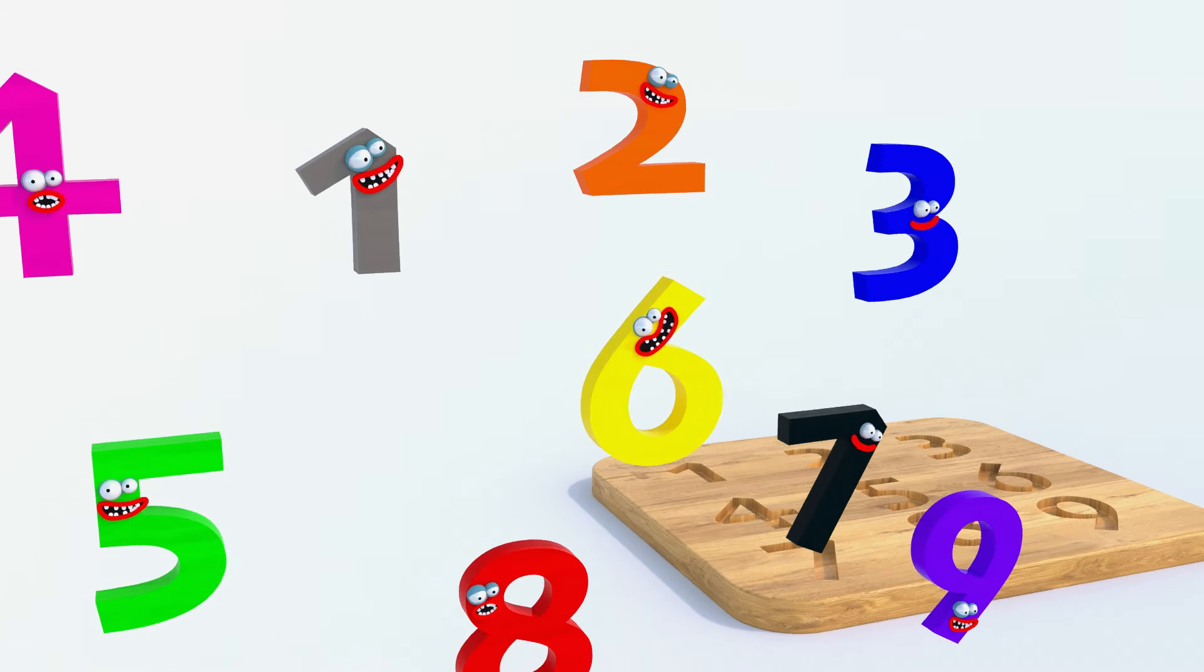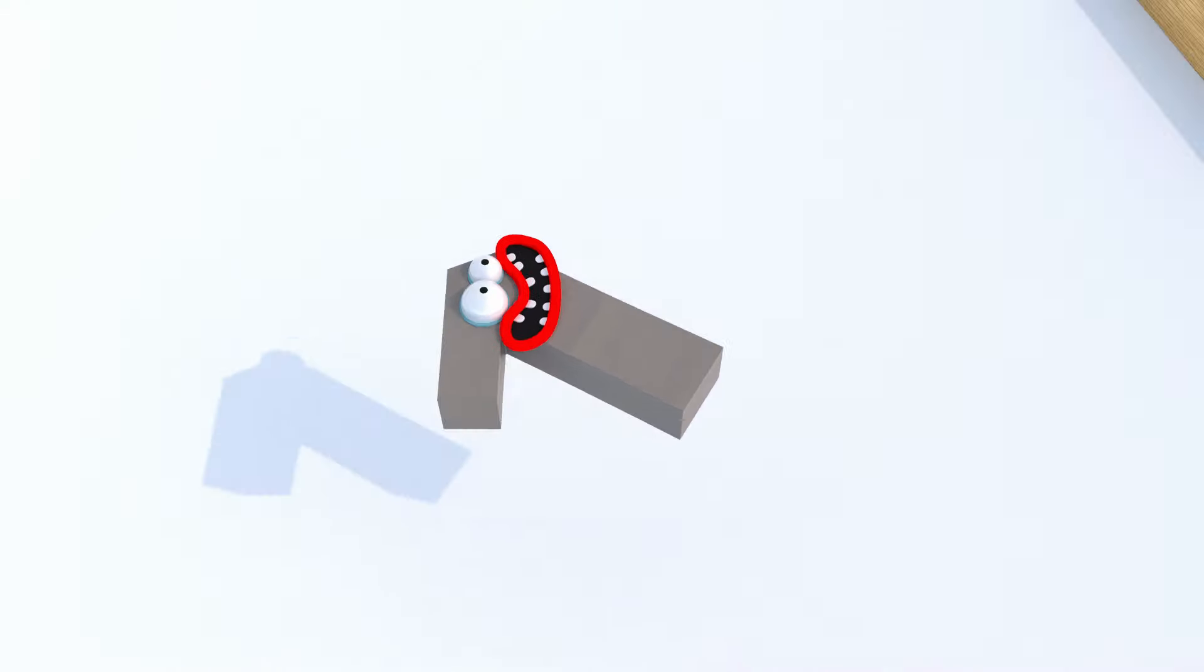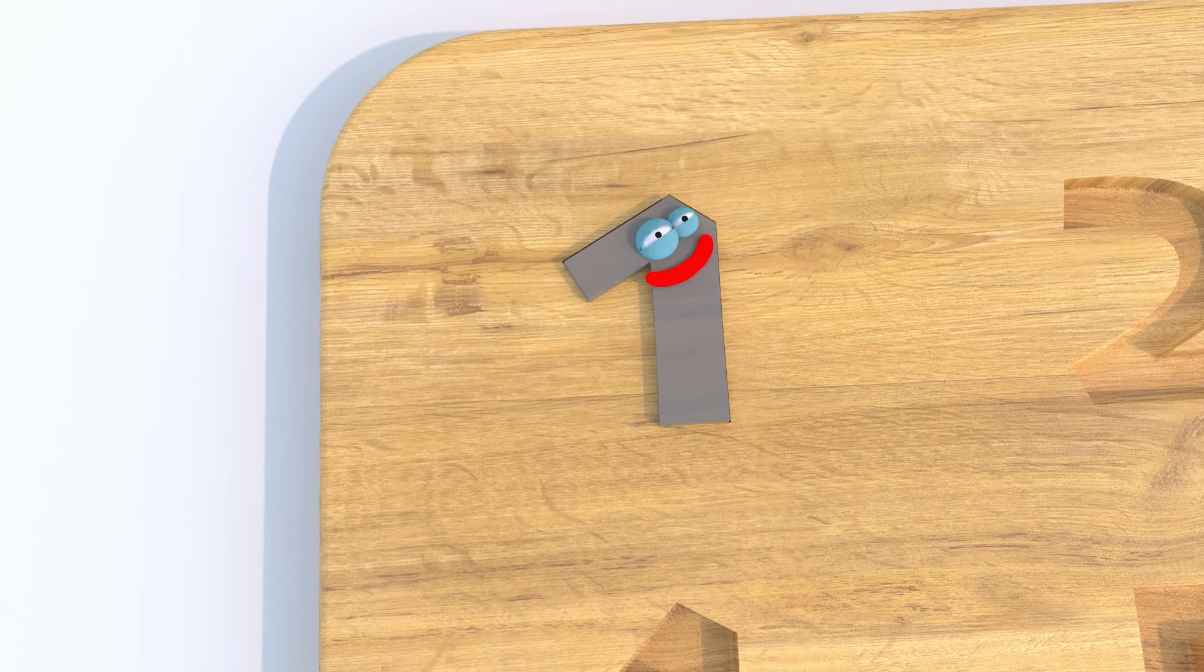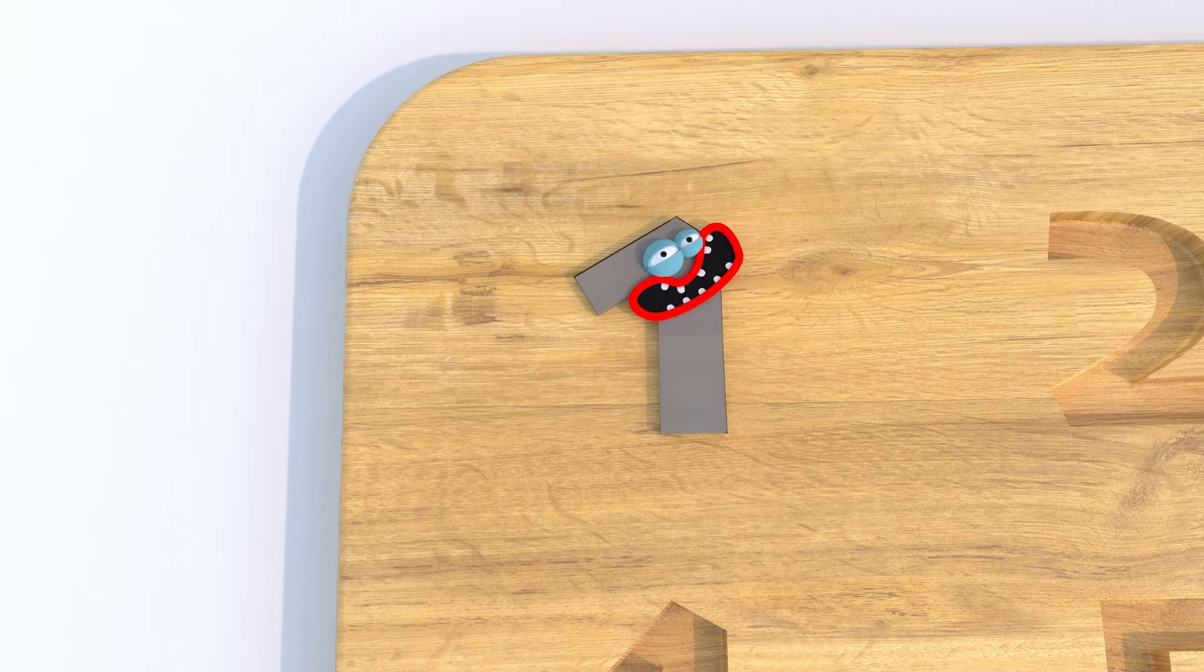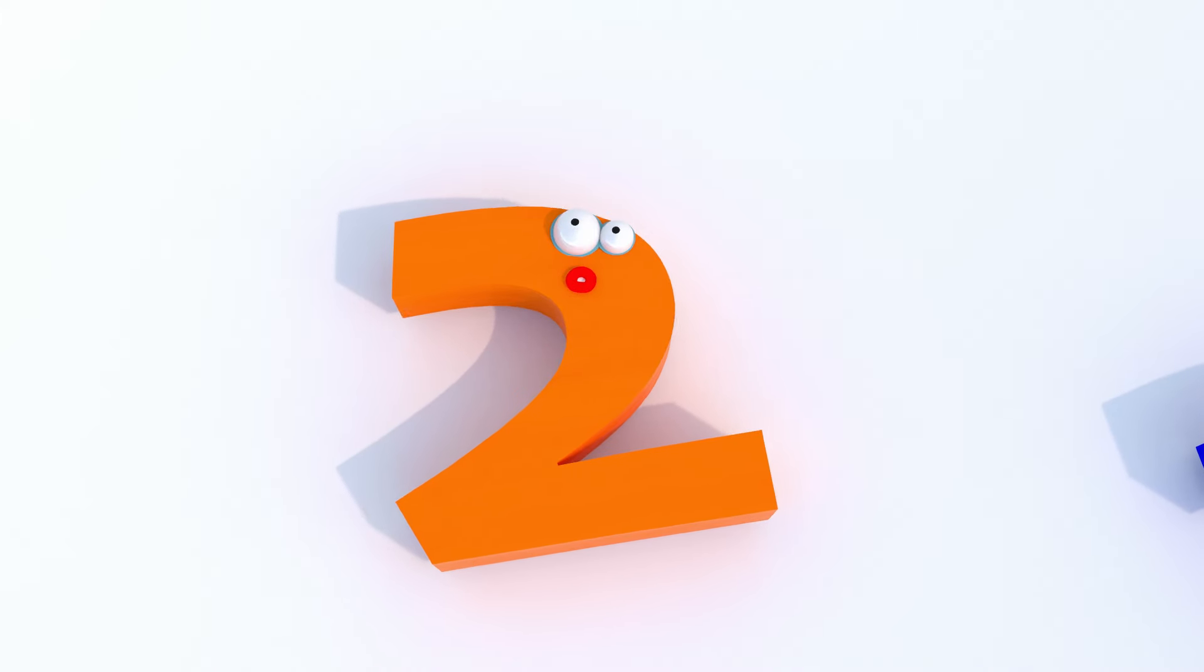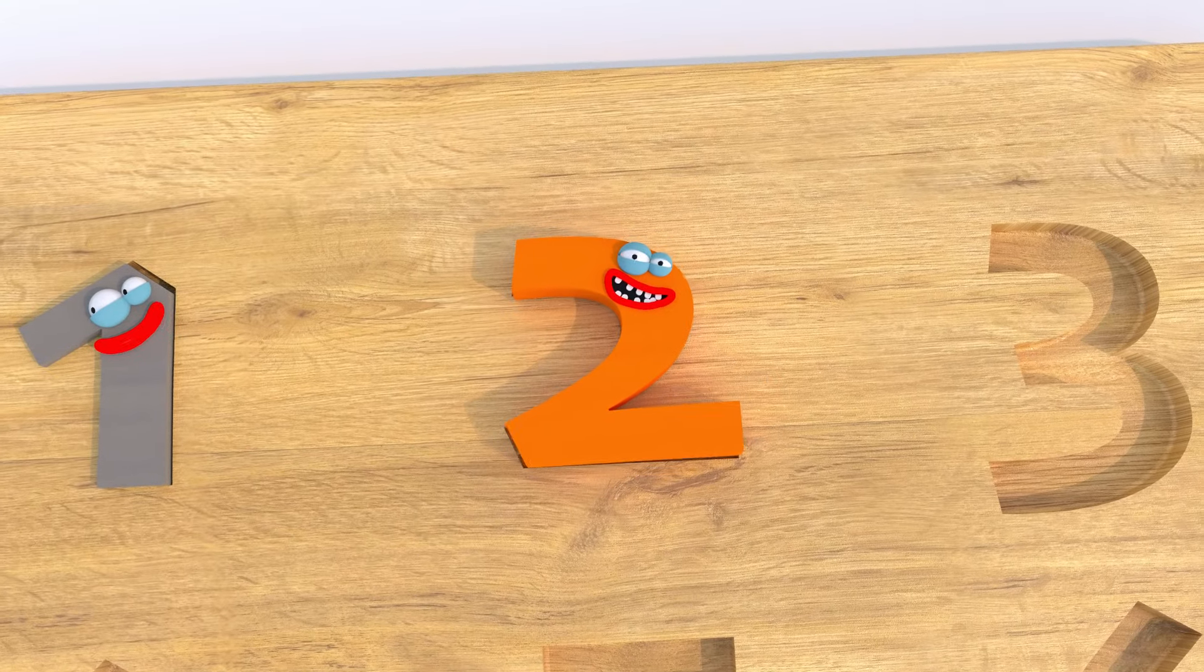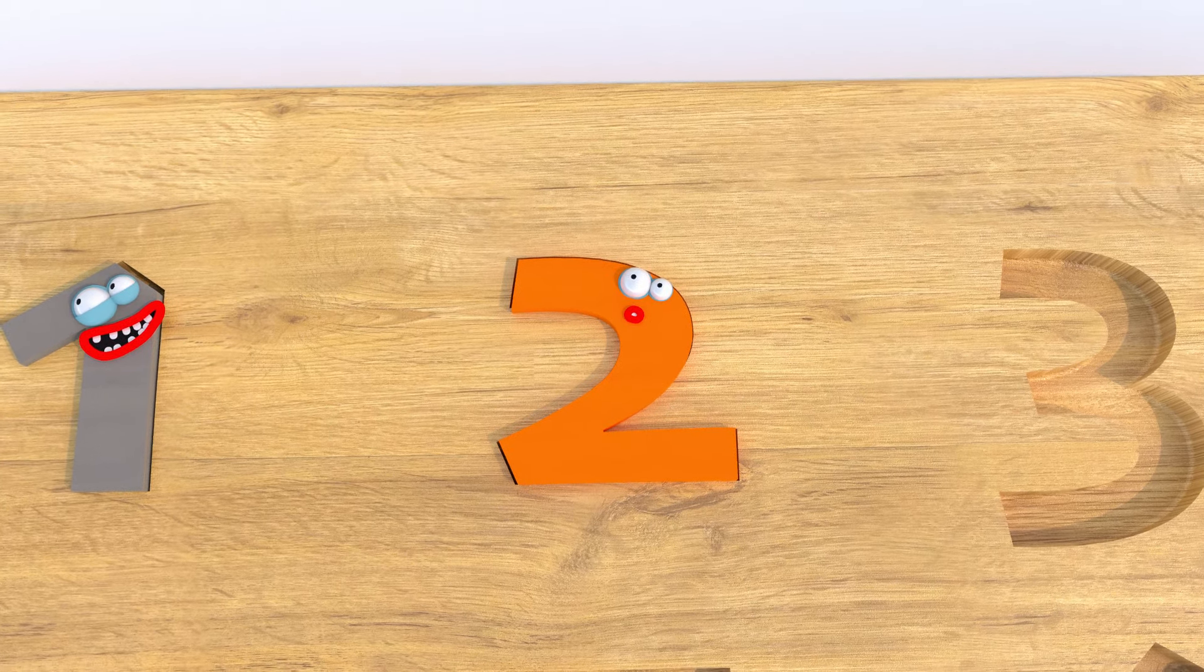Let's learn numbers and colors. Yes, like that. This is a gray number one. Gray one! Yay! Good! Number two. This is an orange, and it's a number two. Orange two!